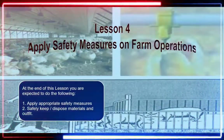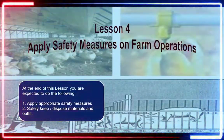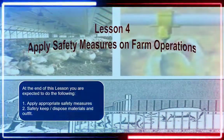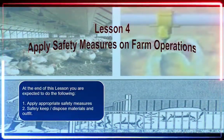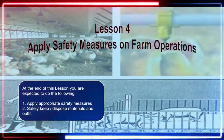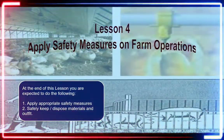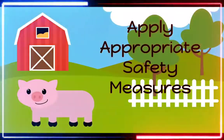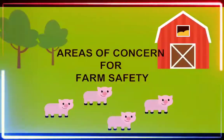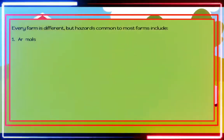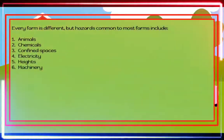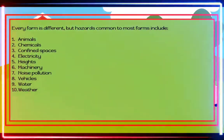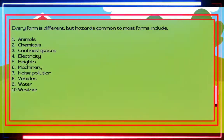Animal Production Lesson Number Four: Apply Safety Measures on Farm Operations. At the end of this lesson, you are expected to apply appropriate safety measures and safely keep and dispose of materials and outfit. Every farm is different, but there are hazards common to most farms.